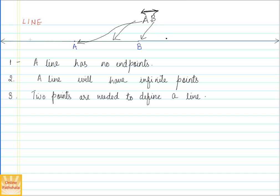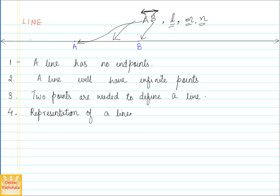Another way to represent a line is using a simple letter of the alphabet. For example, we can call this line L, or line M, or line N — you can use these letters to represent a line. So the representations of a line are: one, using two-point notation with double arrows; and two, using single letters such as L, M, or N.